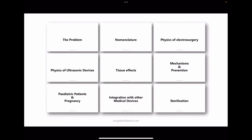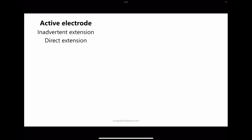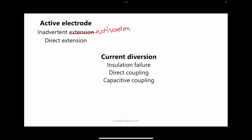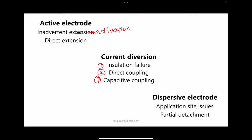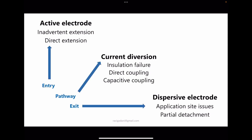Surgical energy can cause injury through several mechanisms. At the active electrode level: inadvertent activation and direct extension. Through current diversion: insulation failure, direct coupling, and capacitive coupling. At the dispersive electrode level: application site issues or partial detachment. These can be remembered as entry-level issues, pathway-level issues, and exit-level issues.